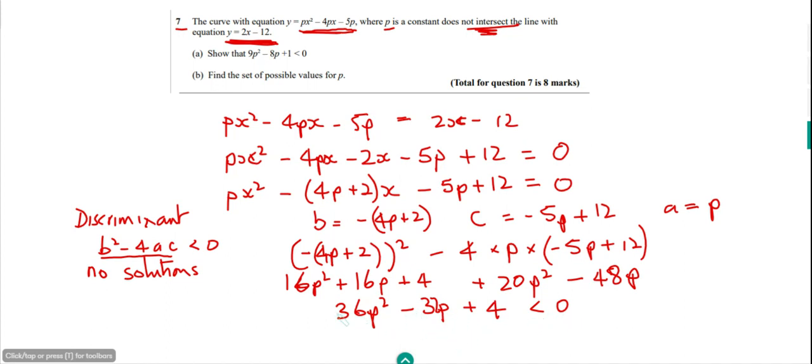So I'm just going to divide through by 4 here. So we'll get 9P squared minus 8P, as required, plus 1. And that's less than 0.